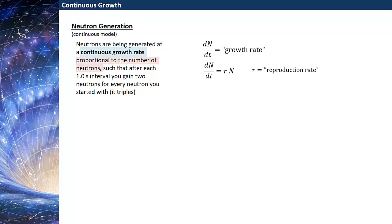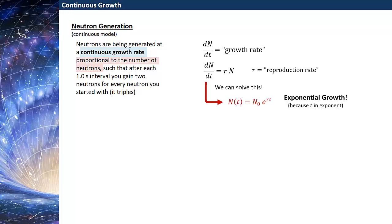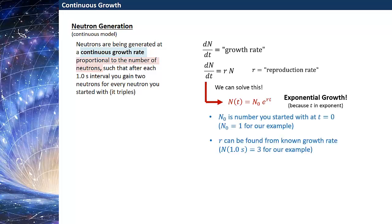The next thing to point out is that this growth rate is going to be proportional to n, the number of neutrons we have at any given time. We're going to call that proportionality factor r, and give it the name reproduction rate. Rather than guess what that reproduction rate is, let's solve this first and then figure out how to calculate it from the information we know. We can solve this using separability and we'll find that the number of neutrons at any given time t is equal to N₀ times e to the rt. Again we call this exponential growth because t is in the exponent. N₀ is the number you started with at t = 0 — for our example N₀ = 1.